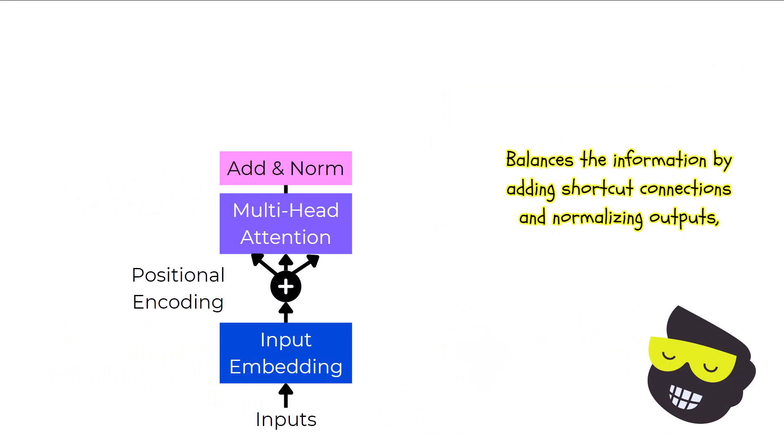After the multi-head attention layer does its job, the output goes through an add and norm layer. Think of it as a way to keep everything balanced. It adds a shortcut connection, residual connection to the output, which helps the model remember important information. Then, it normalizes the results to keep things in check, making sure the learning process stays smooth and stable.